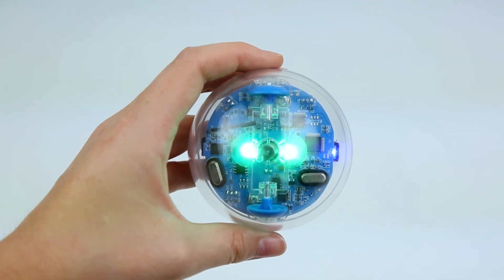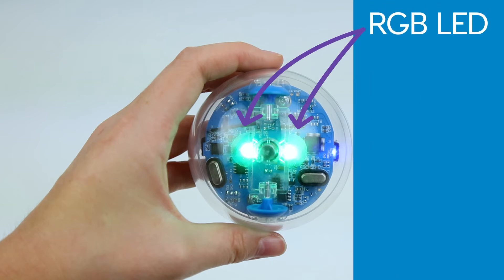There are three LED lights inside Sphero. The first two are the main RGB lights on top, which means that each one is made up of three diodes: R for red, G for green, and B for blue.